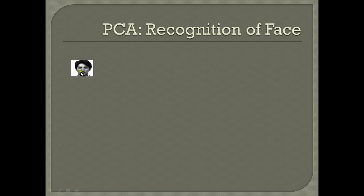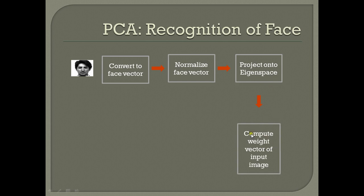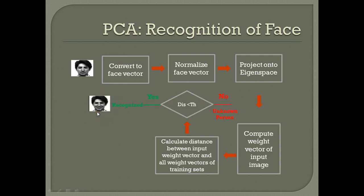In the recognition phase, when an unknown image is given, it is first converted to a face vector — a column vector of dimension mn by 1 — and then normalized by subtracting the previously calculated mean. We then calculate the projection of this image onto the k selected eigenvectors and compute the weight vector for this input image. Then we calculate the distance of this weight vector with the weight vectors of each image in the training set and find the minimum distance. If the minimum distance is greater than a certain threshold, we categorize this as an unknown person and it is not recognized. If the distance is less than the threshold, we classify the image as recognized and match it to the nearest image in the training set.